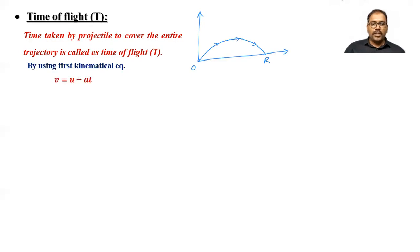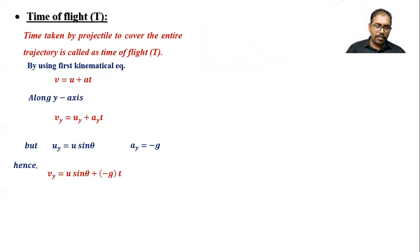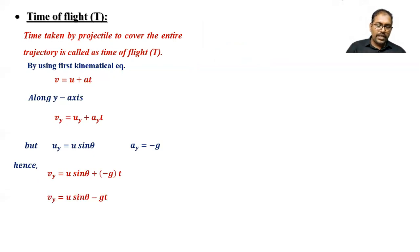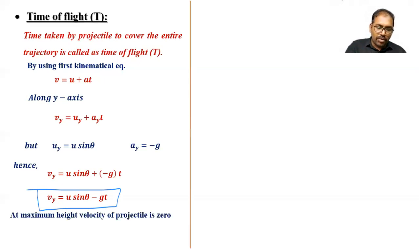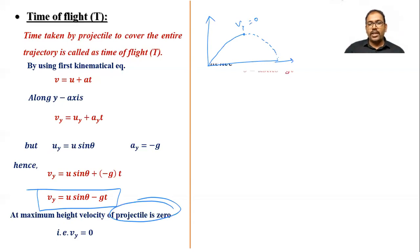Using the first kinematical equation v equals u plus at, written along the y-axis: v_y equals u_y plus a_y times t. Substituting u_y equals u sin theta and a_y equals minus g, we get v_y equals u sin theta minus g t. At maximum height, the vertical velocity of the projectile is zero, so we substitute v_y equals zero.